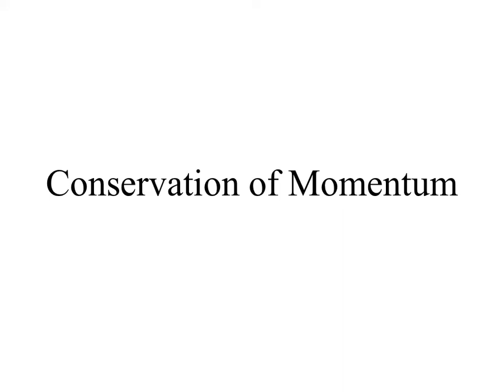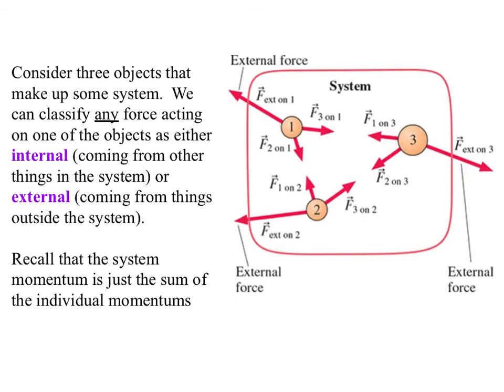Today we're looking at another conservation law, another pillar of classical mechanics called the conservation of momentum. Consider three objects that make up some system. Remember that a system is a mathematical and mental construct. It's not a thing that actually exists. It's a thing we put on the universe. So we can pick any three objects.